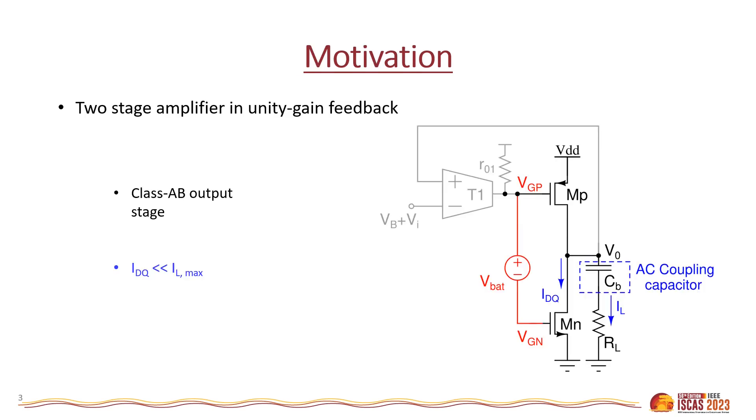This figure shows a representative schematic of a two-stage amplifier in unity feedback configuration. For simplicity, the compensation capacitor is not shown here. It is driving a resistive load RL which is AC coupled with a capacitor CB. The load current IL depends upon the value of RL. For a smaller load resistance, the output transistors are supposed to drive large load current.